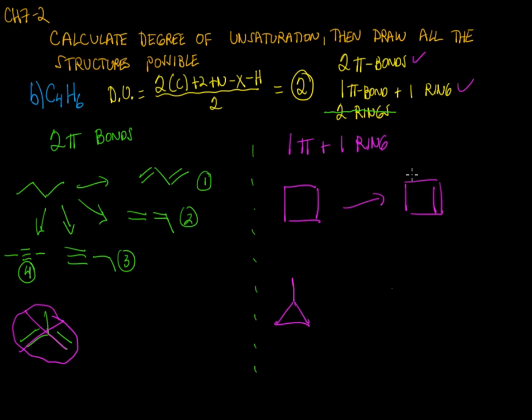To the ring, any which side, it's all equivalent. This makes cyclobutene, so that would be possibility five. There's no other possibilities here for one pi and one ring with the four-membered ring.